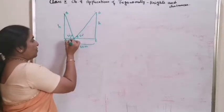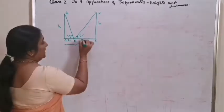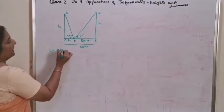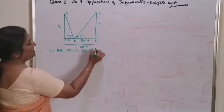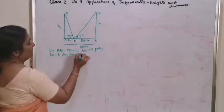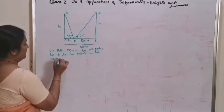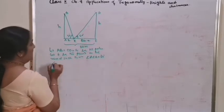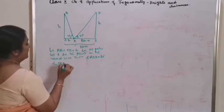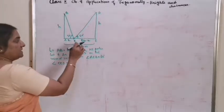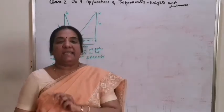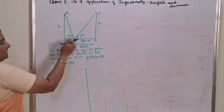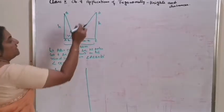Let E be the point on the road. One angle is 30 degree and the other is 60 degree. You need to get the height of the pole and the distances — how far point E is from A or from C. The total length is 80. Take one of the measures as X, and the other will be 80 minus X. Let AB equal CD equal H be the poles. Let E be the point on the road such that angle AEB equals 30 degree and angle CED equals 60 degree.